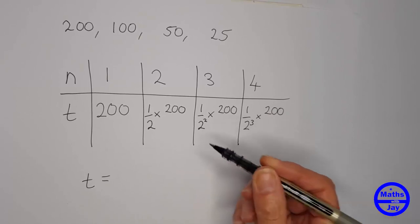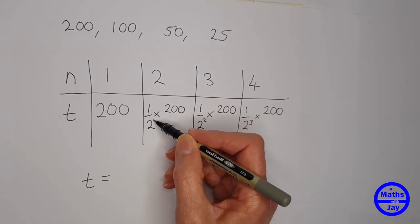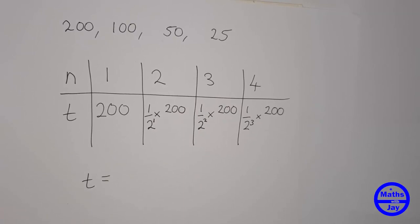And we've got a similar pattern going on here, because in fact we could say that 1 over 2 is the same as 1 over 2 to the power of 1.